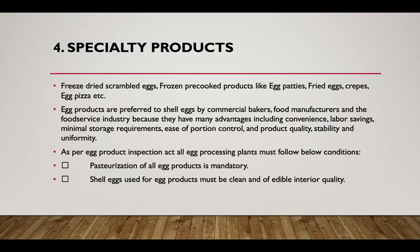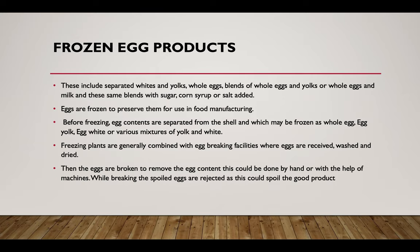Egg products are preferred over shell eggs by commercial bakers, food manufacturers, and the food service industry because of many advantages including convenience, labor saving, minimal storage requirement, ease of portion control, and product quality stability and uniformity. Regarding product inspection at egg processing plants, the pasteurization of egg products is mandatory. Shell eggs used for egg products must be cleaned and of edible interior quality. These include separated egg whites and yolk, whole products, blends of whole egg, yolk or whole egg and milk, and blends with sugar, corn syrup, or salt. Eggs are frozen to preserve them for use in food manufacturing.